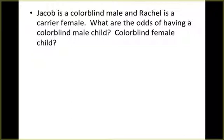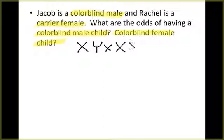Lastly, Jacob is a colorblind male and Rachel is a carrier female. What are the odds of having a colorblind male child and a colorblind female child? Jacob is a colorblind male — X^b Y. Rachel is a carrier female — X^B X^b — she doesn't exhibit the disorder but carries the trait. Cross them and determine the offspring.